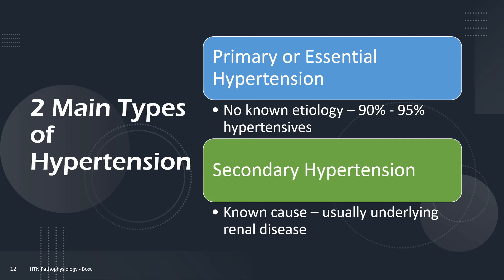There are two main types of hypertension. Approximately 90 to 95 percent of all people with hypertension have no known etiology or cause; hypertension in these people is called primary or essential hypertension. A smaller subgroup has hypertension from known disorders such as pheochromocytoma or primary aldosteronism with excess mineralocorticoid activity, among others. These people with a known cause are said to have secondary hypertension.